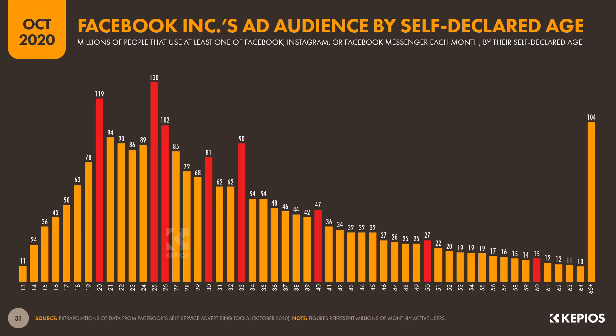For example, as we can see here, there are some peculiar spikes in user numbers at ages 20, 25, 30, 40, 50 and 60. My hypothesis is that these spikes are the result of users rounding their year of birth to the nearest turn of a decade, either due to privacy concerns or perhaps some gentle vanity. However, I still haven't worked out why there's a spike in users born in 1987, who show up as the peculiar spike at 33 years old on this chart.